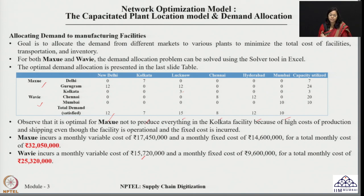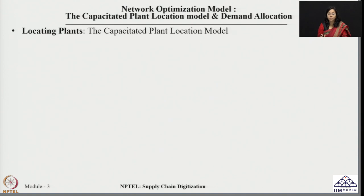So the total monthly fixed cost and variable cost are calculated separately for the two companies. Now, can we find a better solution? How can this cost be reduced further? This leads us to introduce the well-known capacitated plant location model, where the decision is about finding the optimum location of facilities such that total transportation cost plus fixed cost of facility selection is minimized.